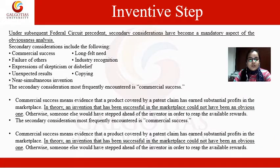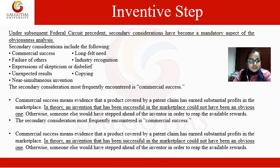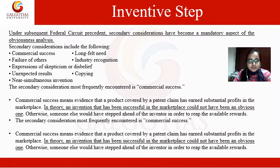Under subsequent federal precedents, secondary considerations have become a mandatory aspect of the obviousness analysis. Secondary considerations include commercial success, failure of others, and near-simultaneous inventions. The most frequently encountered secondary consideration is commercial success — an invention that has been successful in the marketplace would likely not have been an obvious one.